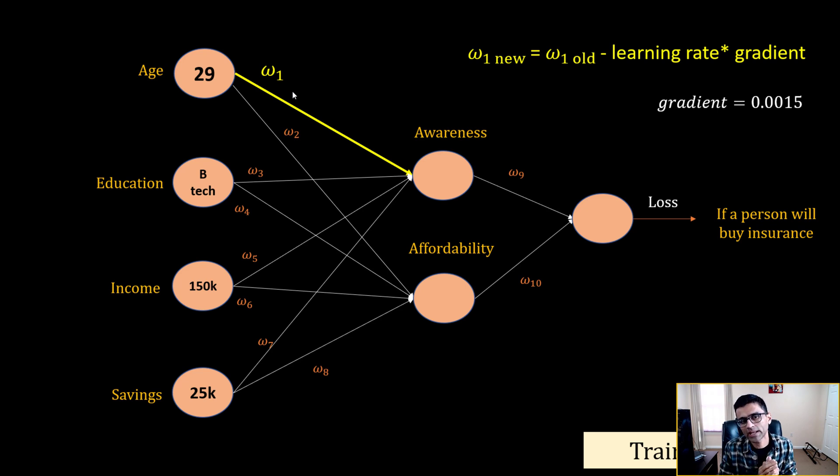So now what happens is when you have a very low gradient, your learning process becomes slow. So the equation for w1 new will be w1 old minus learning rate times gradient. Learning rate is let's say 0.001, then 0.001 times 0.0015 is a very very small number. So your w1 is hardly changing.